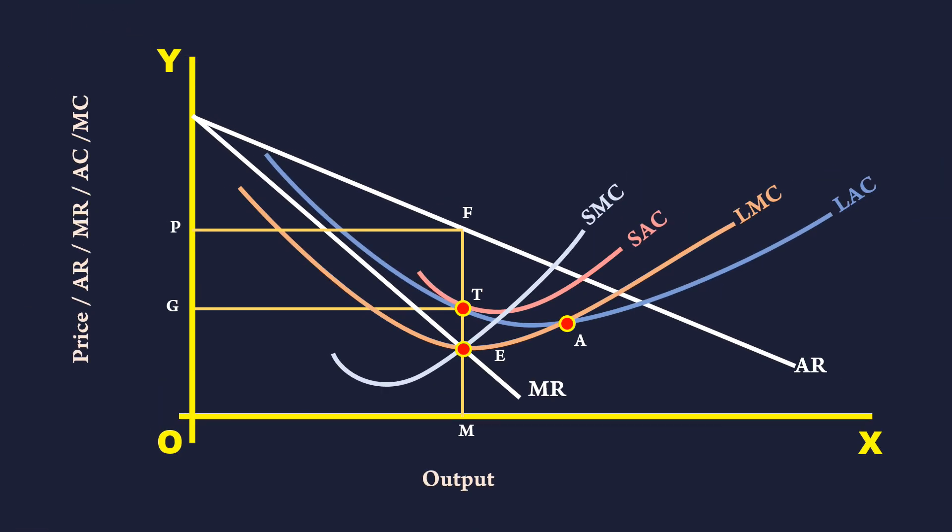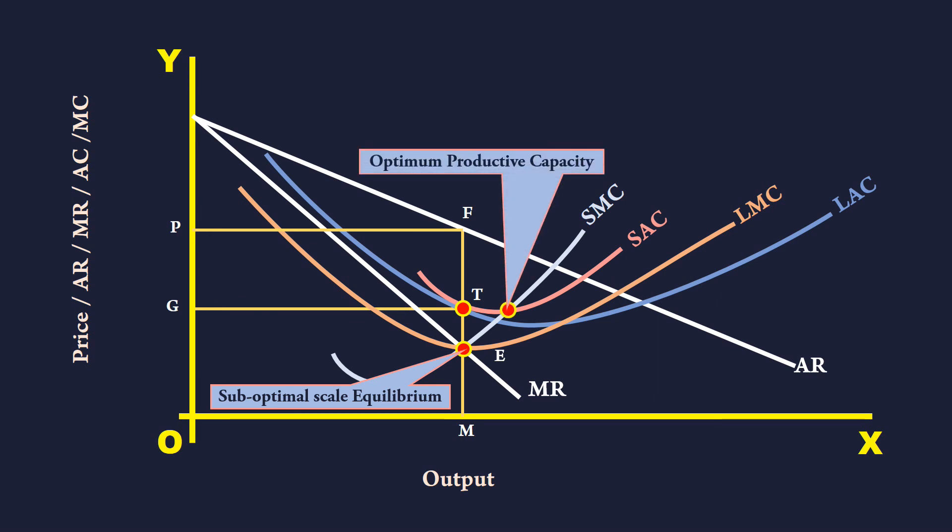This is the graph. The monopoly firm is in long run equilibrium at E. It is a sub-optimal scale equilibrium. Why is it a sub-optimal scale equilibrium? The firm is operating on the falling side of the LAC. The firm is not using the optimum productive capacity or full productive capacity of the plant.